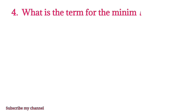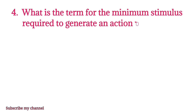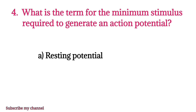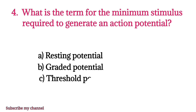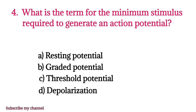MCQ number four: What is the term for the minimum stimulus required to generate an action potential? Option A: resting potential, option B: graded potential, option C: threshold potential, option D: depolarization. The right option is option C.